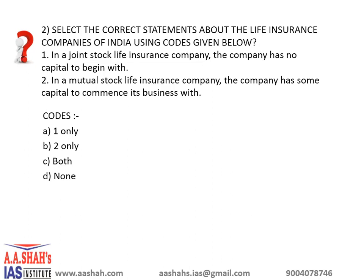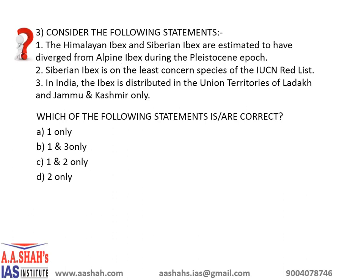Moving on to the next question. Consider the following statements. First: the Himalayan ibex and Siberian ibex are estimated to have diverged from the Alpine ibex during the Pleistocene epoch. Second: the Siberian ibex is on the least concerned species of the IUCN Red List. Third: in India the ibex is distributed in the Union territories of Ladakh and Jammu and Kashmir only. Which statements are correct? A: 1 only, B: 1 and 3 only, C: 1 and 2 only, D: 2 only.